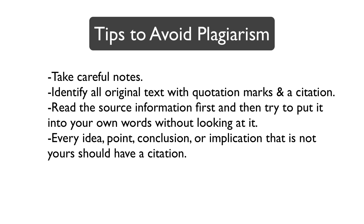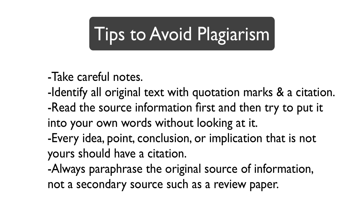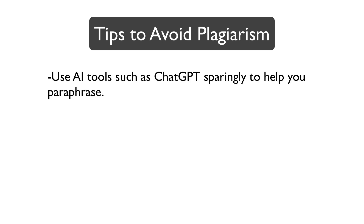Even reporting an idea from your own previous work requires a citation. Always paraphrase the original source of information, not a secondary source such as a review paper. Use AI tools such as ChatGPT sparingly to help you paraphrase — you should instead use AI tools to help you learn how to paraphrase effectively. If you are unsure about your paraphrasing, use a plagiarism checker to make sure your text is not too similar to published work.